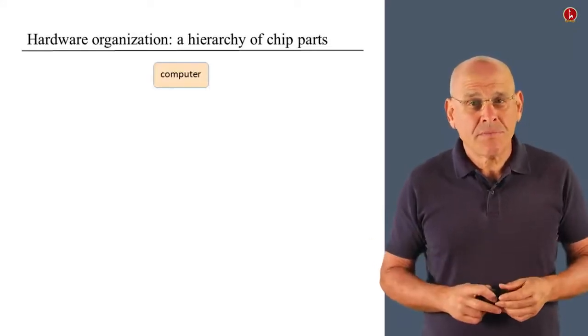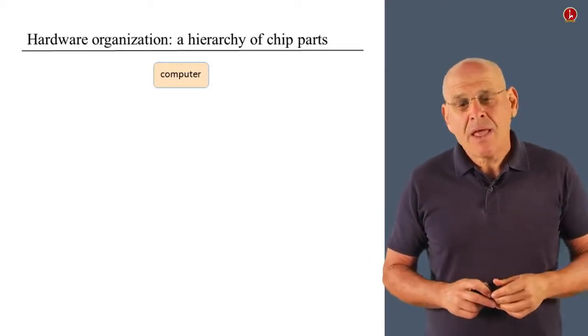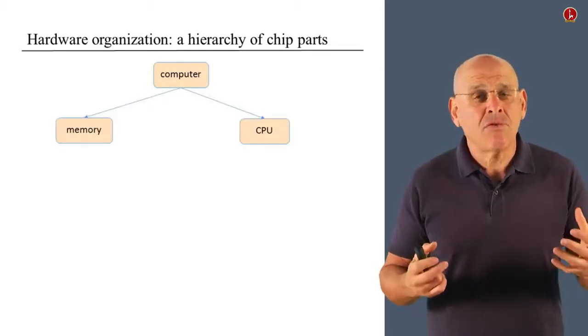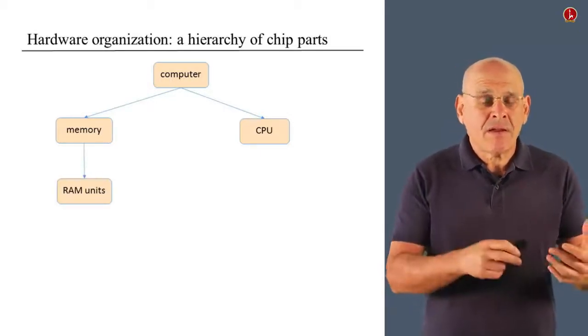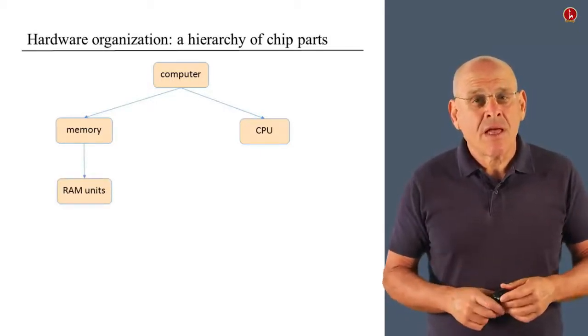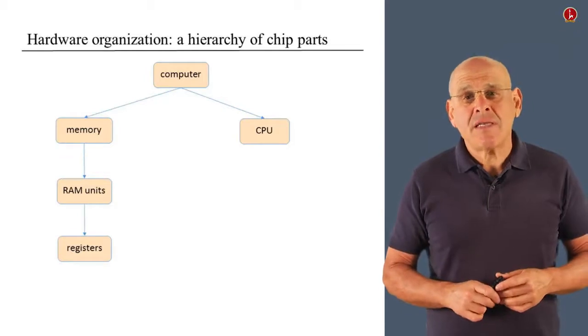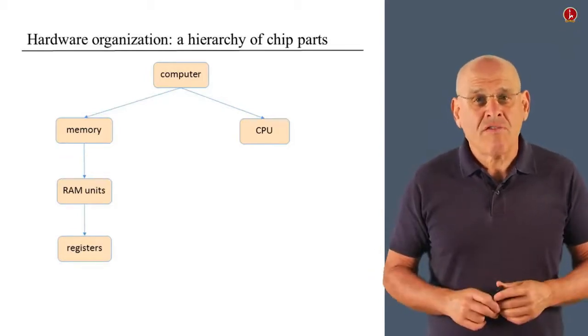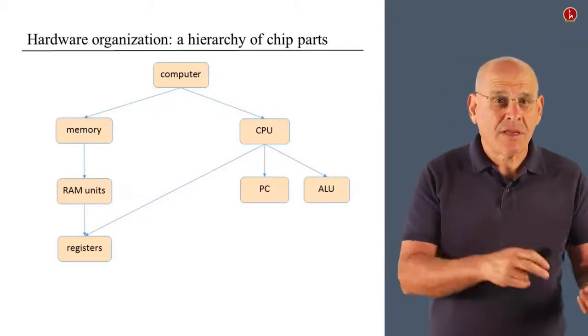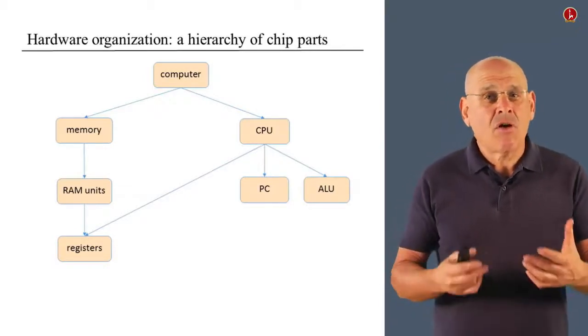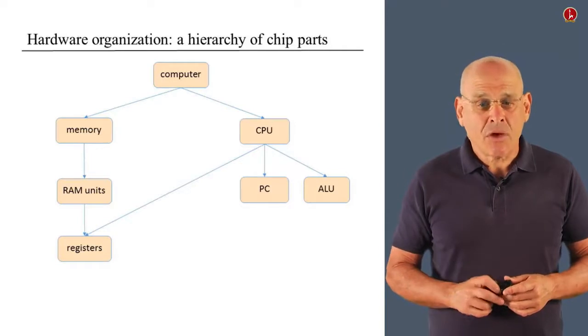Well, we're building a computer and the computer is implemented as a very high level chip and this chip makes use of two main components, a CPU and a memory unit. The memory in turn consists of several RAM units which are pieced together. And every one of these RAM units is basically a collection of many registers. The CPU also includes several registers. If you recall, the D register, the A register. It also includes a program counter and, of course, the ALU that we built in project two.